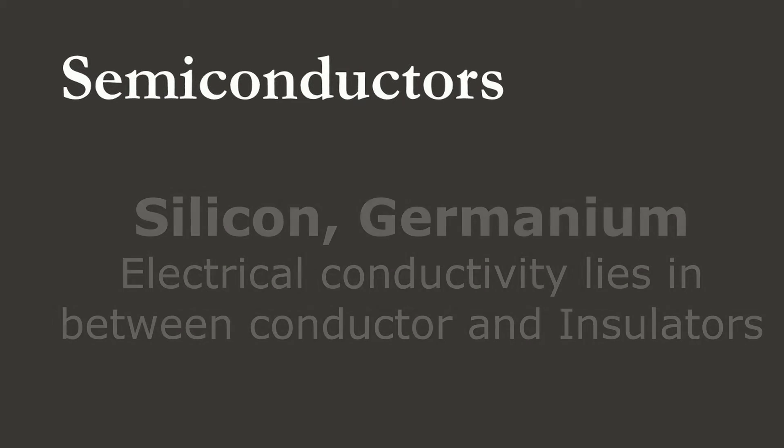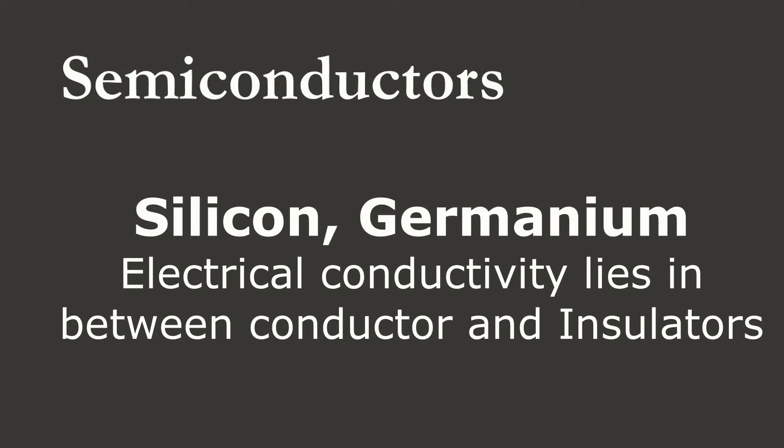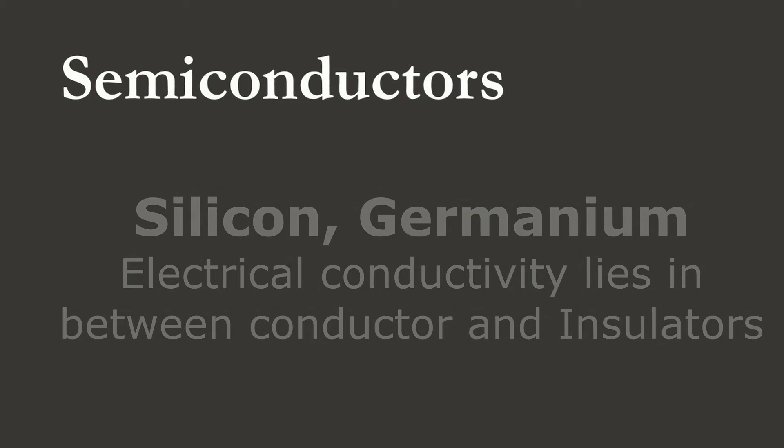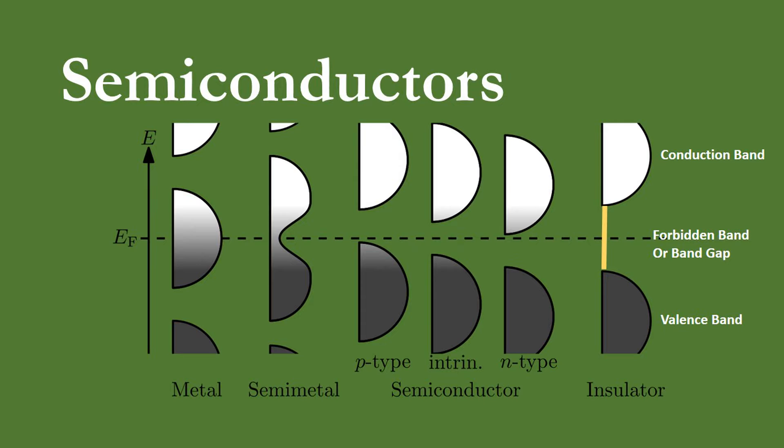Substances like carbon, silicon, and germanium whose electrical conductivity lies between conductors and insulators are known as semiconductors. The valence band of these substances is almost filled but the conduction band is almost empty. The forbidden band or energy gap between valence and conduction bands is very small, about 1 to 4 electron volts.